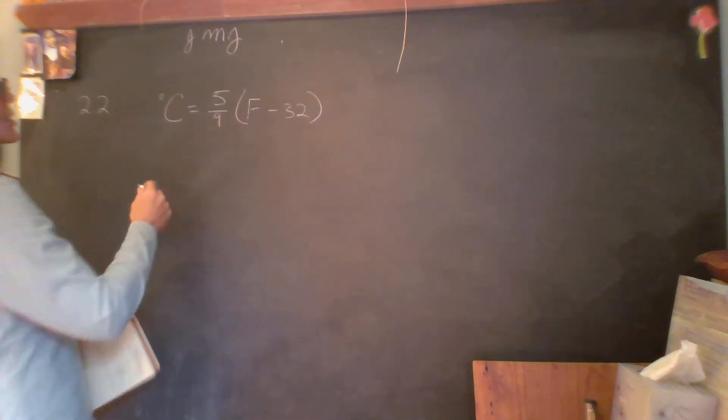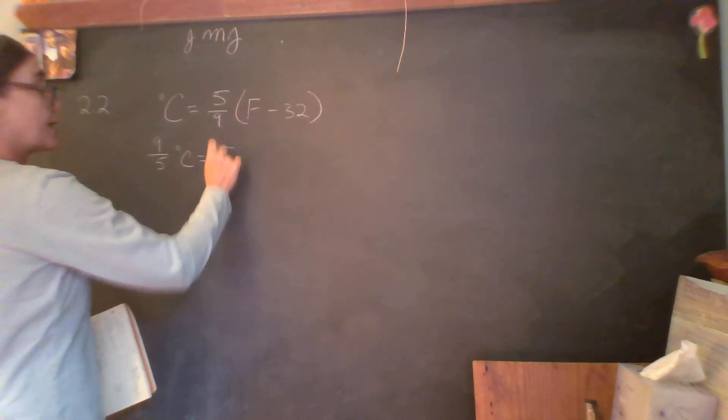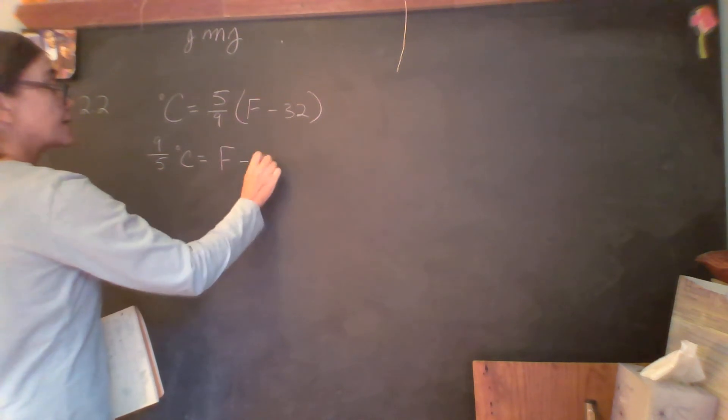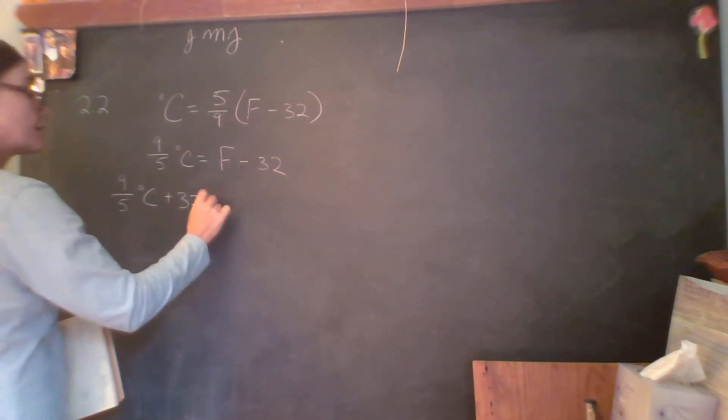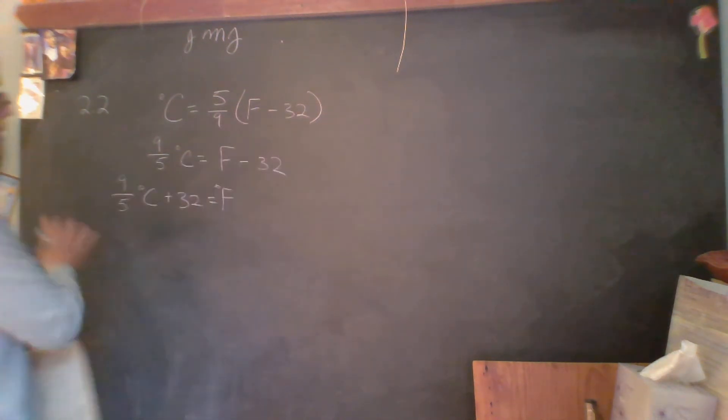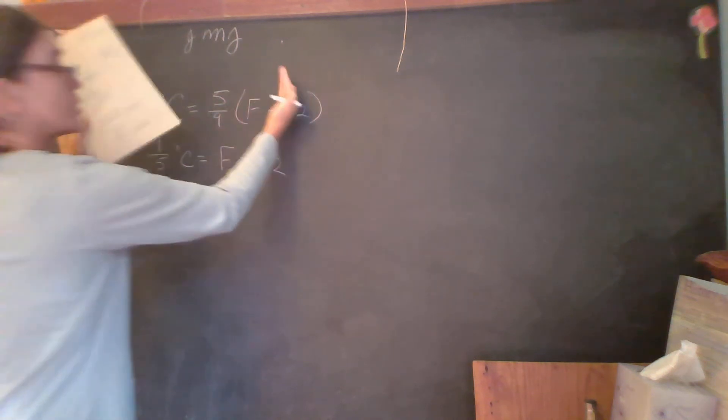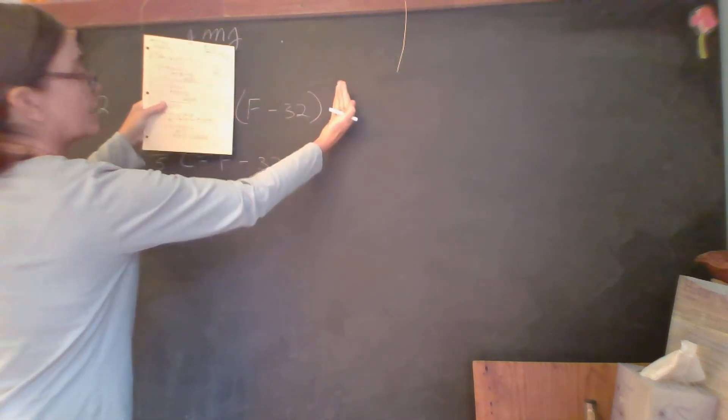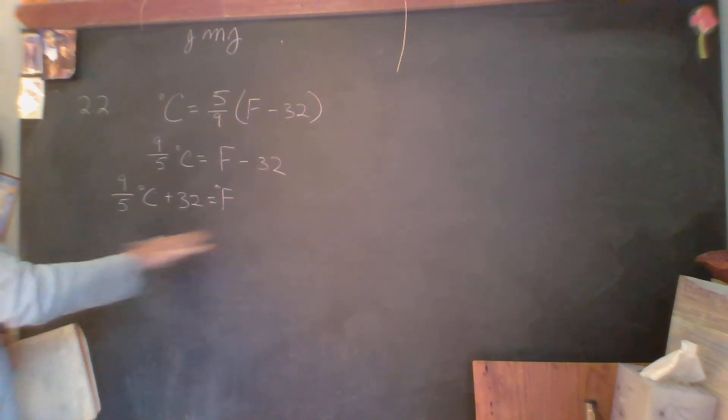We're going to multiply both sides by 9 fifths. So 9 fifths degrees Celsius equals Fahrenheit minus 32. Notice that the parentheses are not needed in this equation. You don't need them here. In the other direction they're essential—you can't say 5 ninths Fahrenheit and then subtract 32. It has to be done inside the parentheses first. But with this conversion, you don't require the parentheses.